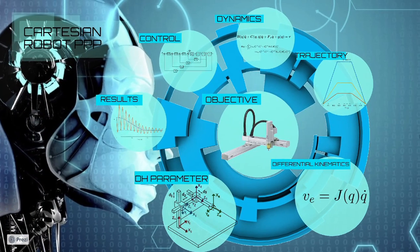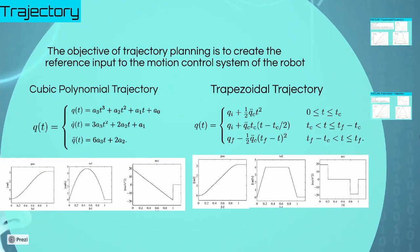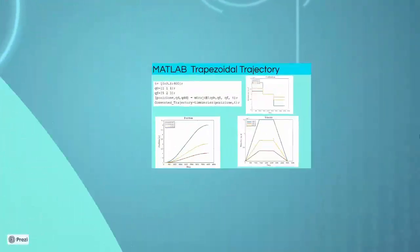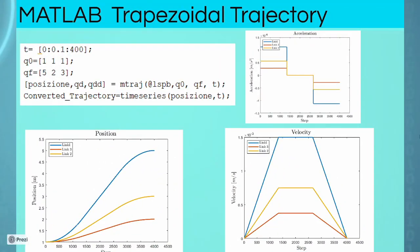Talking about the trajectory, during the lesson we studied the cubic polynomial trajectory and the trapezoidal trajectory. Under MATLAB, using the mtragy function, we can implement the trapezoidal velocity trajectory. In fact, we can recognize the constant cruise velocity interval and, in acceleration, a constant phase acceleration and a constant deceleration phase towards the final position.